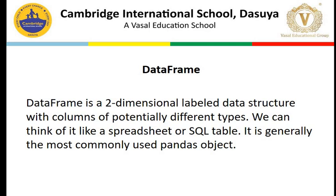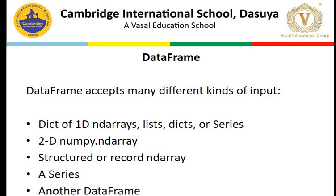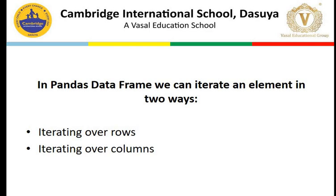We covered thoroughly that a DataFrame is a two-dimensional object like a spreadsheet or a SQL table. These are the different methods of creating a DataFrame — from multiple sources we can create a DataFrame. Coming to today's topic, that is iteration in DataFrame. In Pandas DataFrame, we can iterate elements in two ways: the first is iterating over rows and the second is iterating over columns.